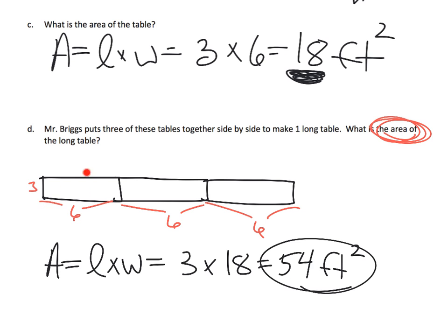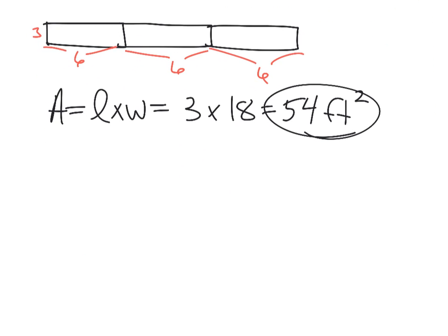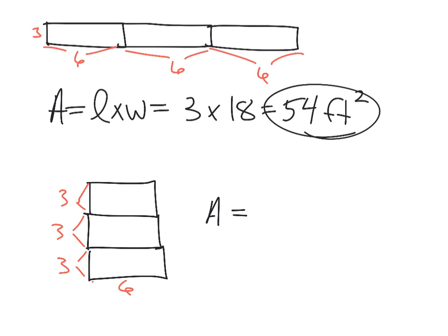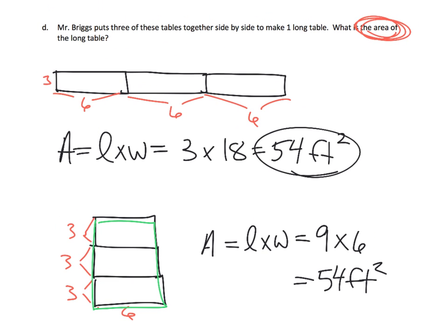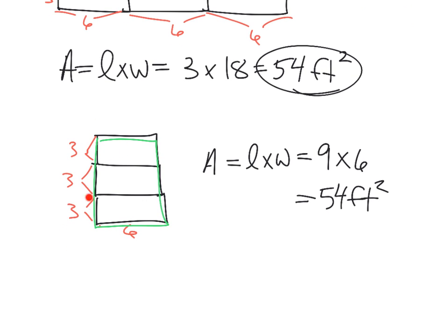Now, heads up: if your students chose to line them up this way, in which case this is three, this is three, this is three, and this is six, well now the area is going to be length times width, which is now nine times six, which is 54 square feet. Isn't that interesting? It's the same area even though you've arranged the tables differently. Here we made one big long banquet table; here we made a table that's more closer to a square because it's nine by six. You get the exact same answer.